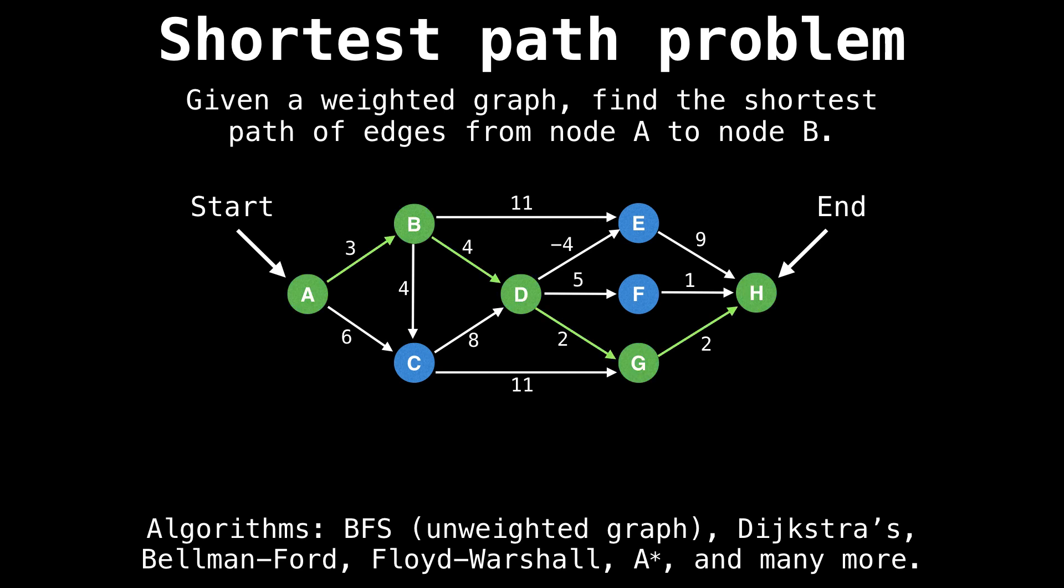If we pretend this graph represents a road system and we're at node A and want to get to node H, our shortest path algorithm should be able to find us a list of edges to follow that will lead us from A to H with minimal cost.